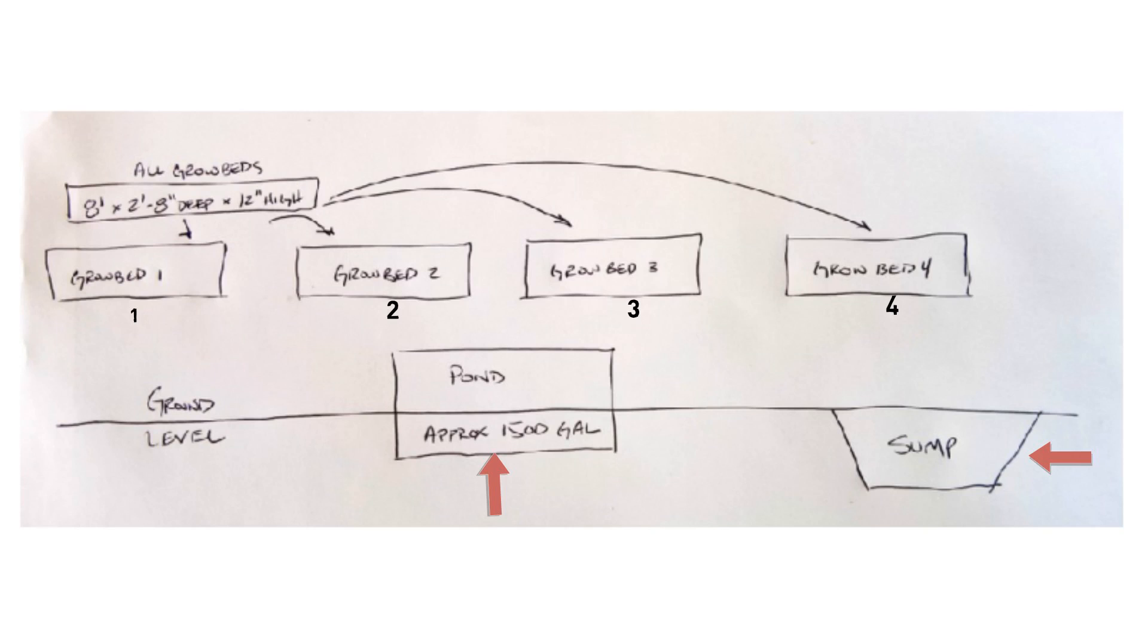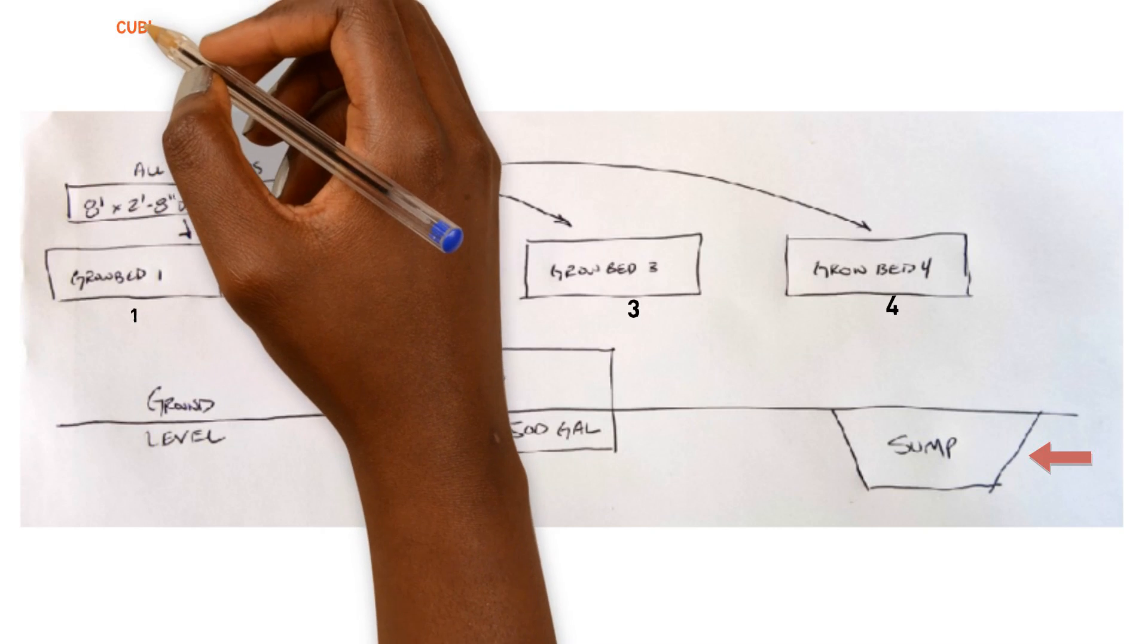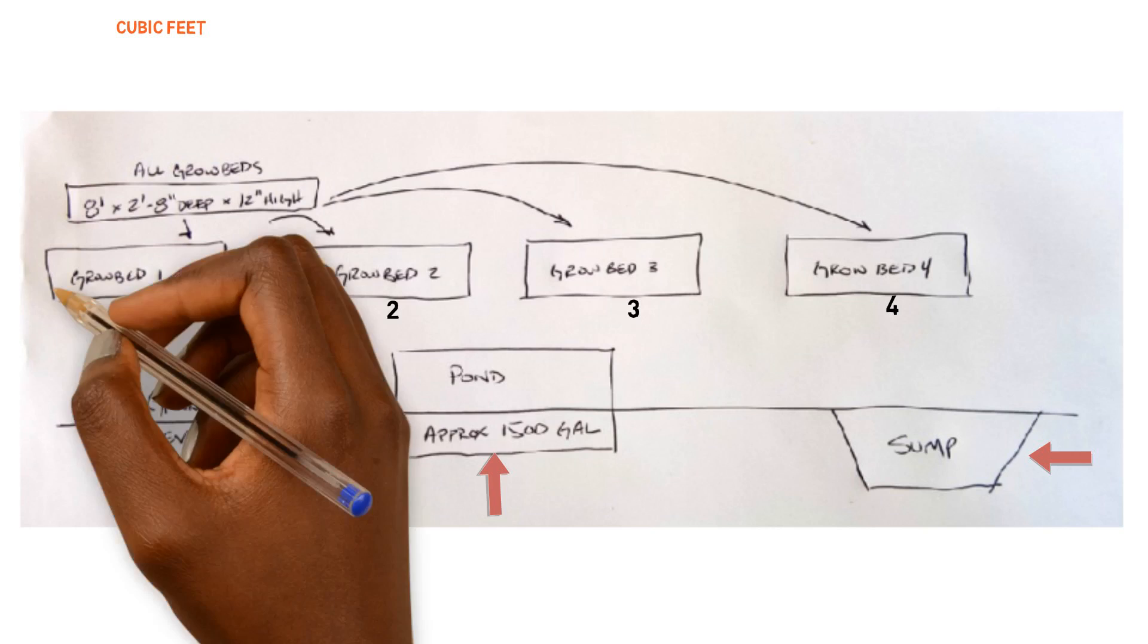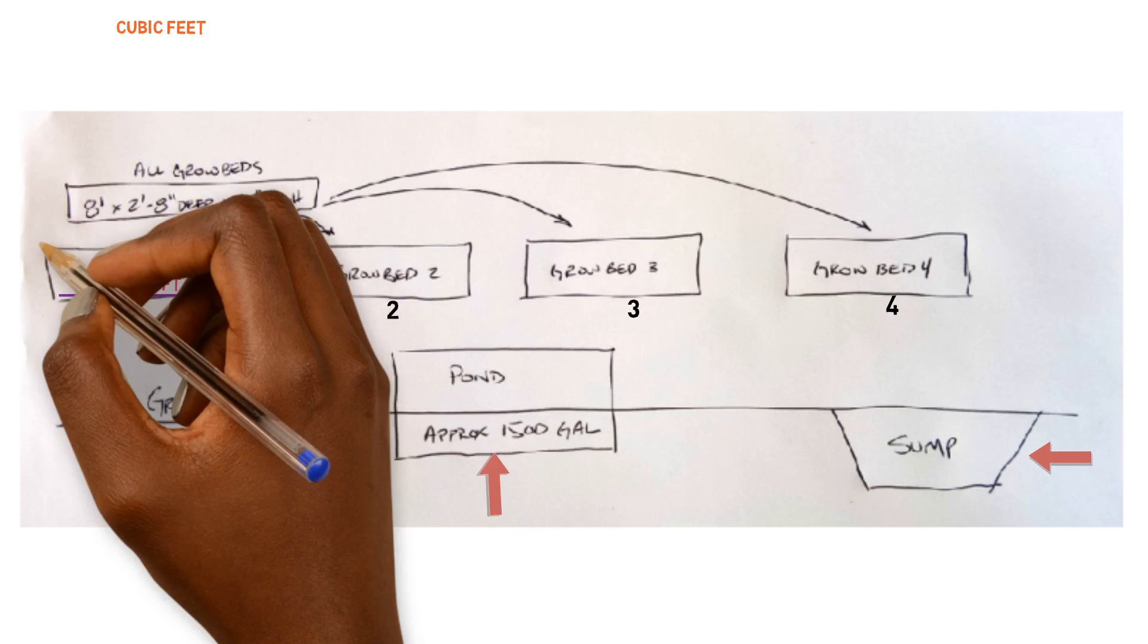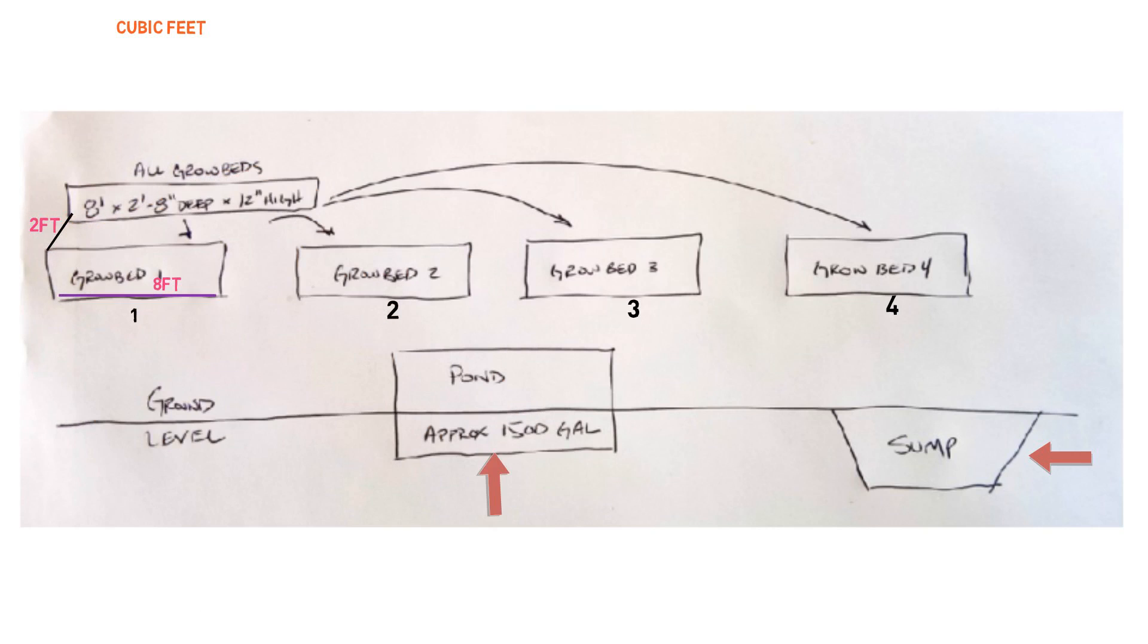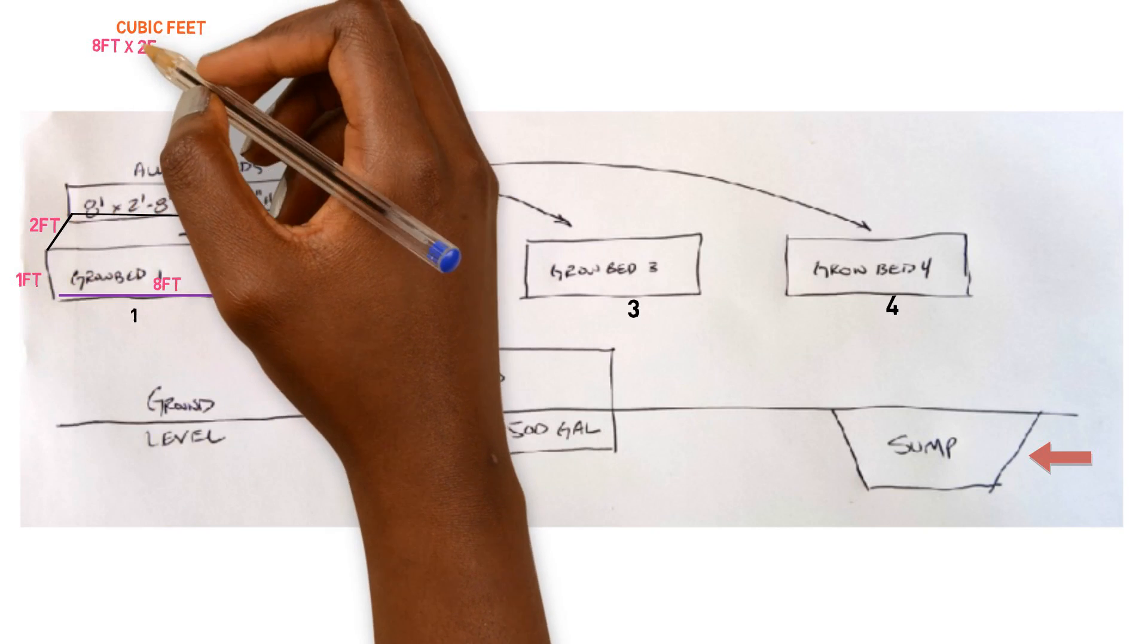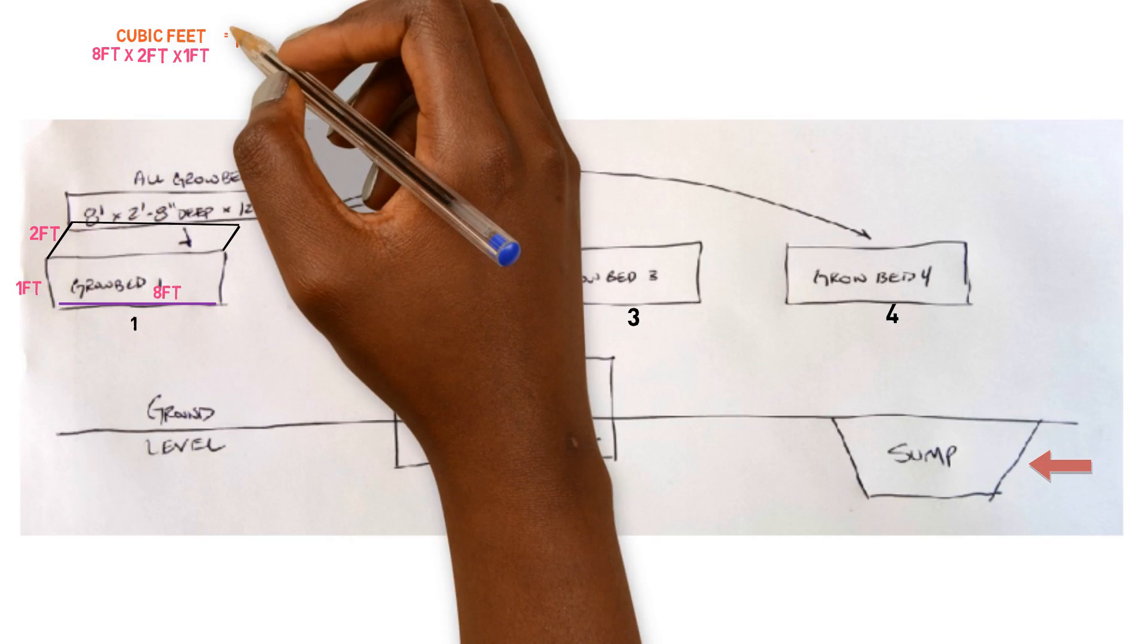So basically what we need to do is take the, find out the cubic feet of each one of the beds, how much cubic feet of area do we have inside of each one of these beds. So the diameter, the measurements of each one of these grow beds is eight feet long. Then they're two feet wide and we have one foot in height. So when we multiply all these together and get the cubic feet, we come out with 16 cubic feet.